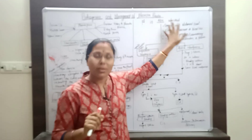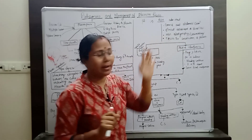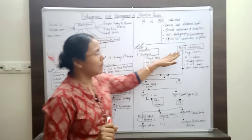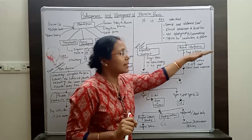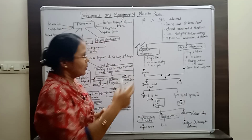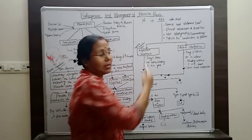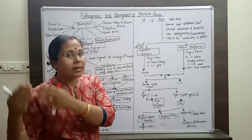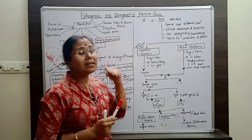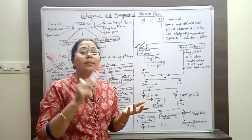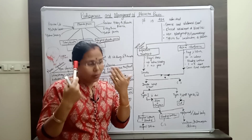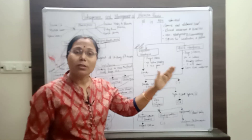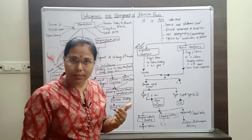After all these examinations, if the maternal condition is found to be good, we proceed with further management. There are two steps: expectant treatment and active interference. In expectant treatment, when the general condition is good, we allow the pregnancy to continue up to 37 to 38 completed weeks. We wait for 37 weeks because by that time the fetal lungs are matured, so the fetus can survive outside the womb. We do not hurry for delivery.